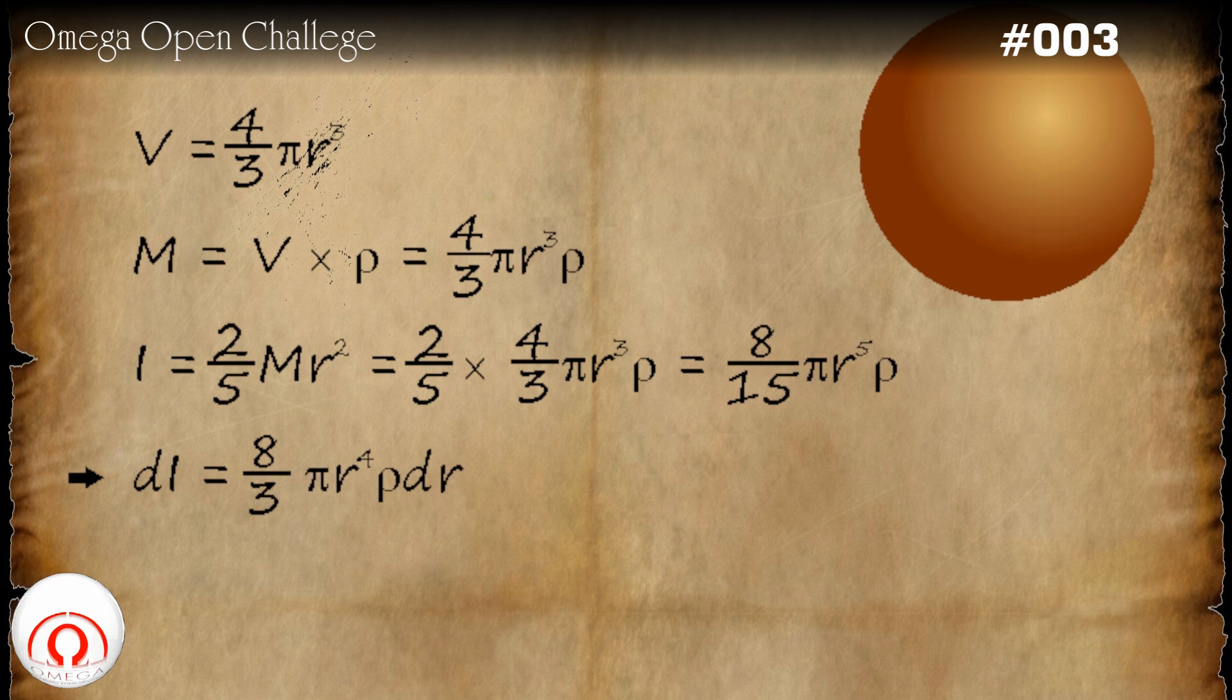What this differentiation gives is the change in the moment of inertia of the sphere if its radius is increased by infinitesimally small dr. In other words, dI is the moment of inertia of the shell that was added to the sphere.